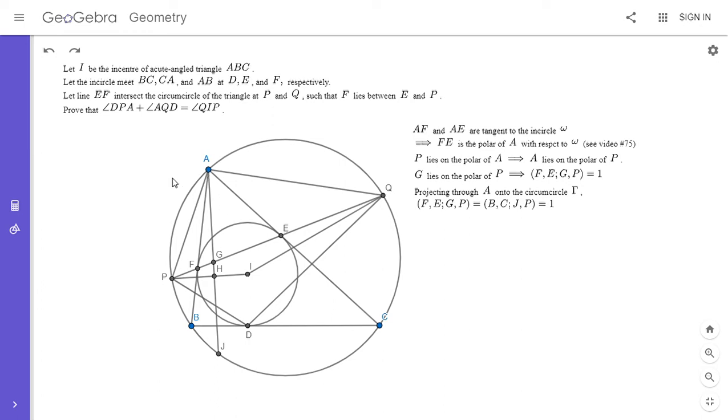So I'm going to do that here. So I'm going to drop a perpendicular from A to QI. And that has to be the polar of Q from what I mentioned before. So now I'm going to label the intersection points K, L and M. And we have to have the cross ratio (B, C, M, Q) is equal to one.